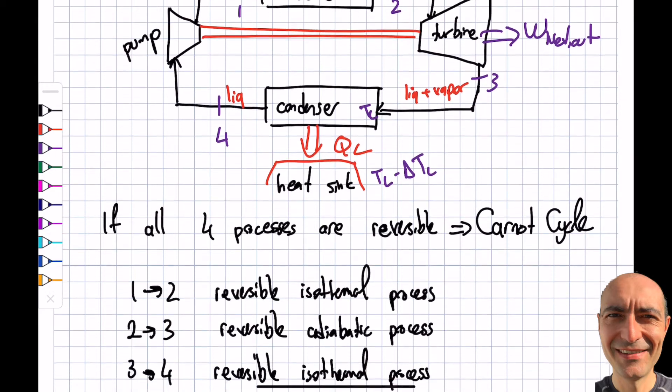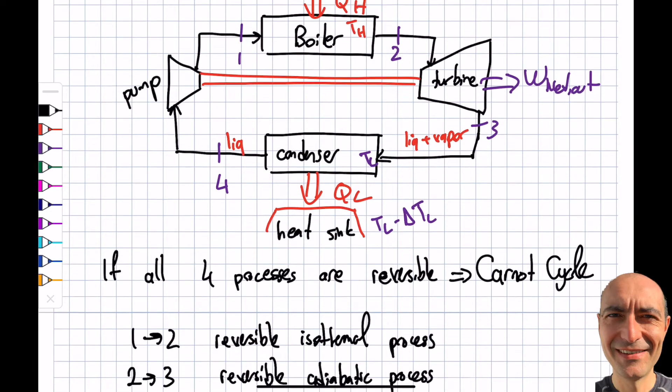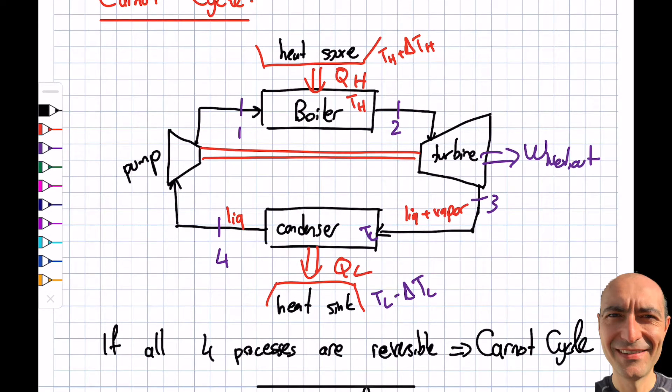The 4 to 1 is just like 2 to 3. So 4 to 1 will be reversible and adiabatic process. By using a pump I will be able to increase the temperature from TL to TH so I can keep going on and on.